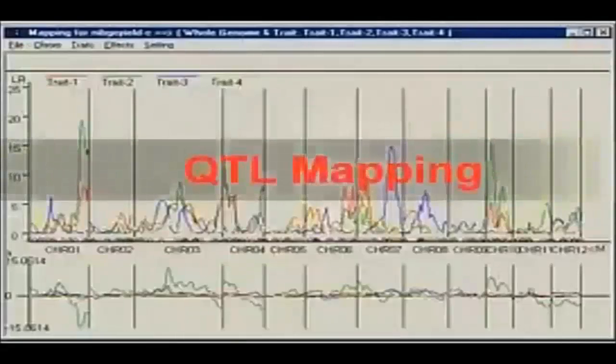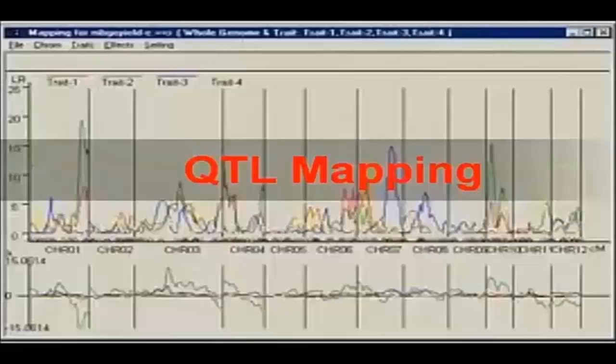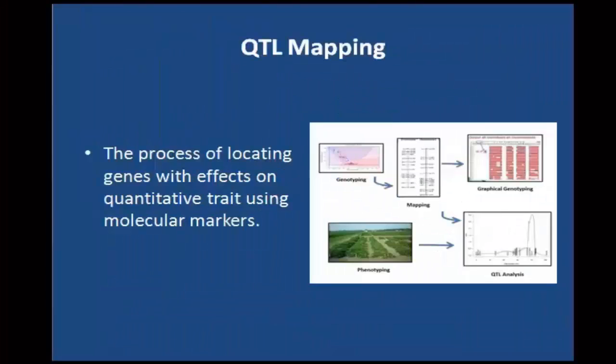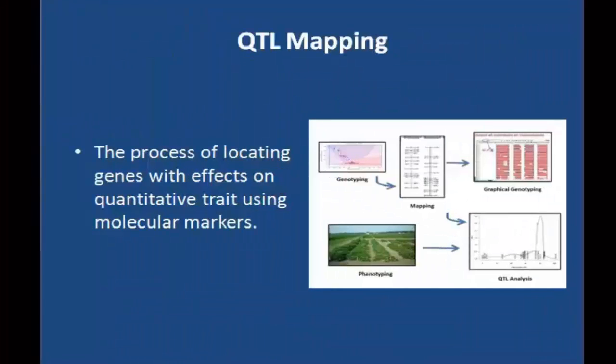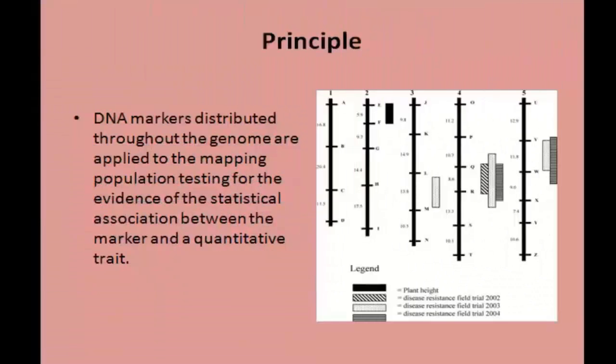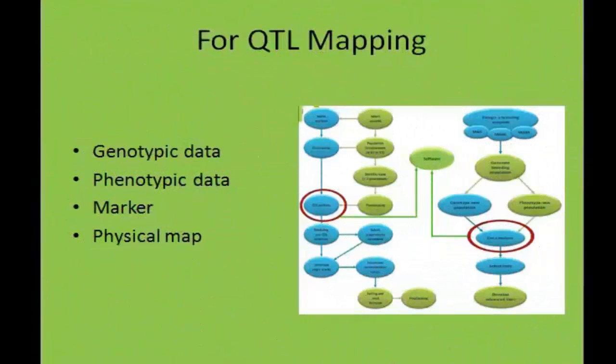QTL mapping is the process of locating genes with effects on quantitative traits using molecular markers. The principle behind QTL mapping is that DNA markers distributed throughout the genome are applied to the mapping population, testing for evidence of statistical association between the marker and a quantitative trait.